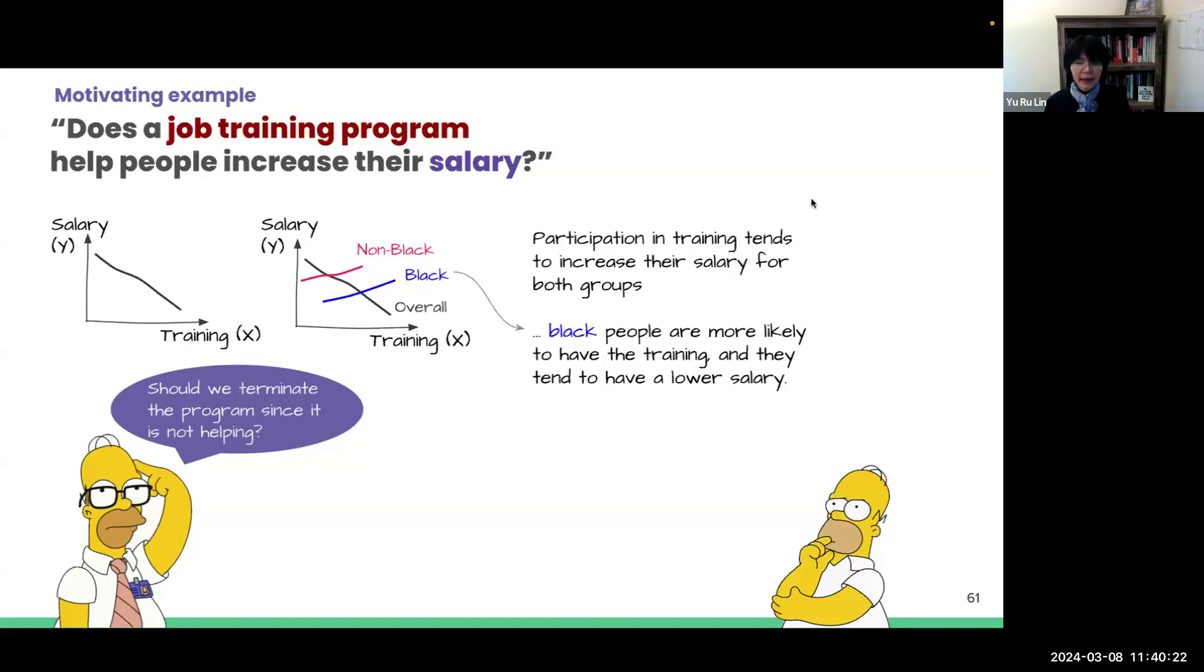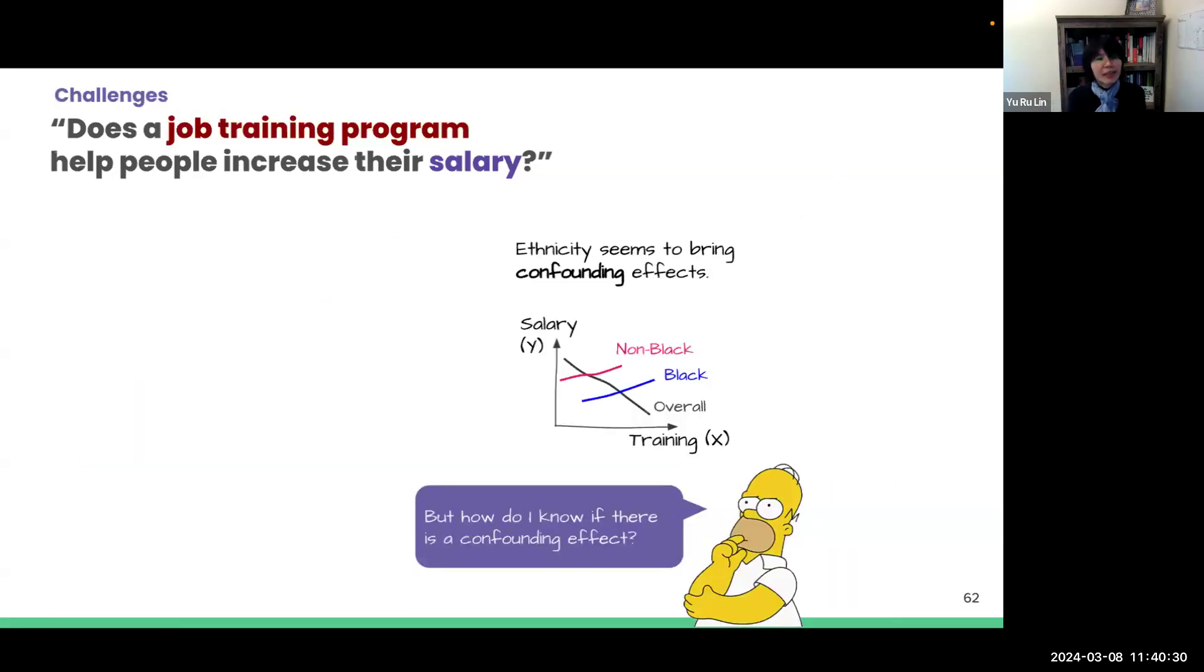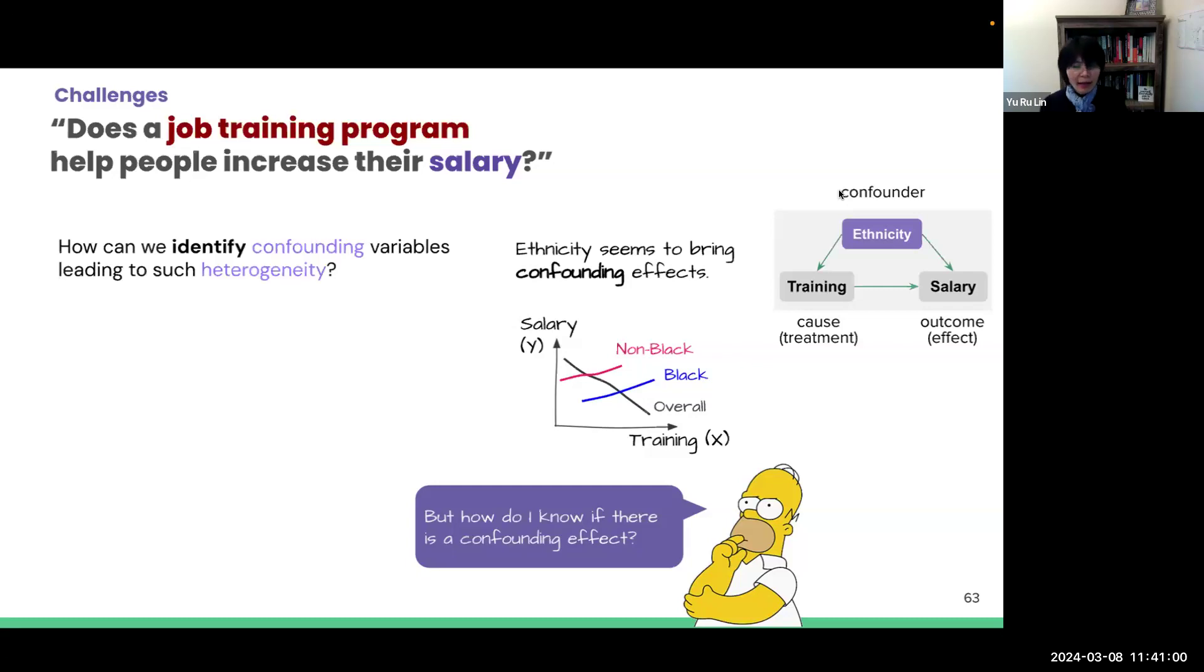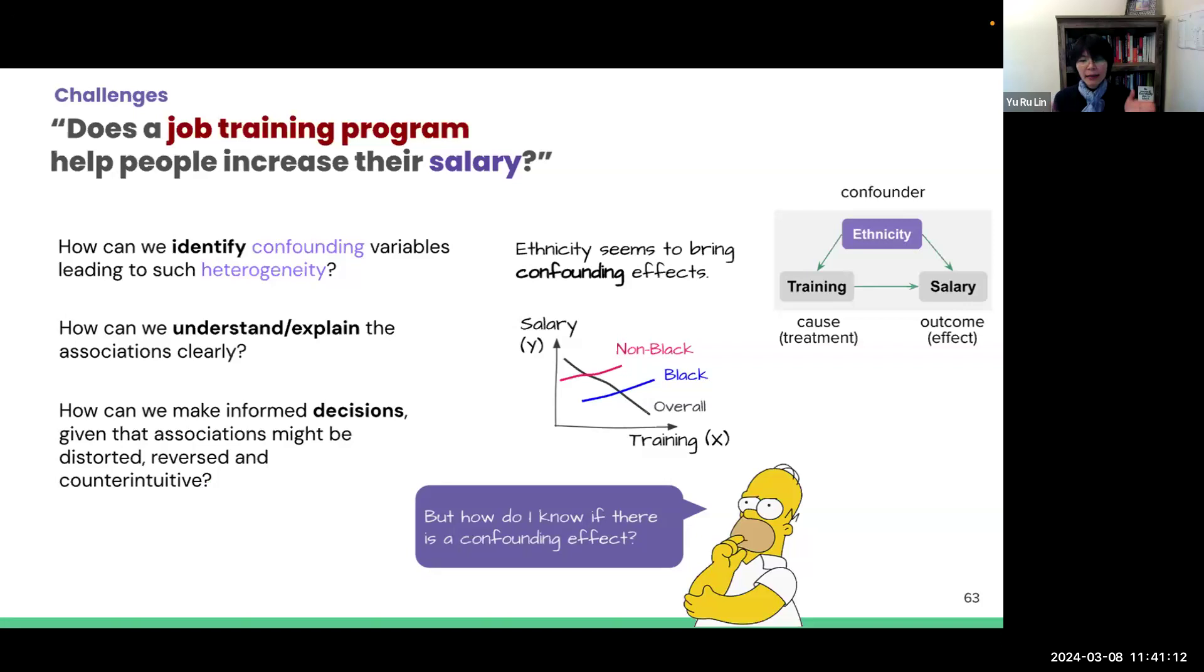So now here's the problem. When I observe an association between the cause and the outcome, how do I know if there's a confounding effect? So in this case, we want to learn how the training leads to a salary increase and ethnicity is the confounding variable that influences both cause and the outcome. So how can we identify confounding variables leading to such heterogeneity? And how can we understand and explain the association clearly? And how can we make an informed decision given that association might be distorted, reversed, and counter-intuitive?